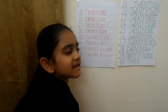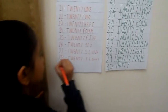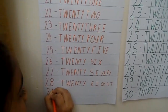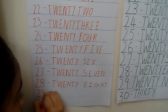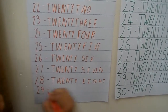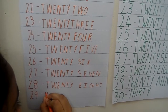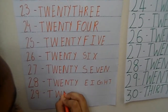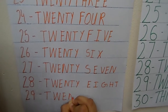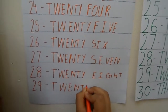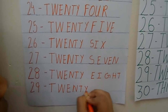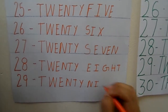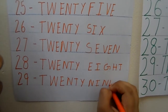Now let's say the next number. 29. So we can just add 2 and 9. Now let's see the number name of 29: T, W, E, N, T, Y, N, I, N, E.